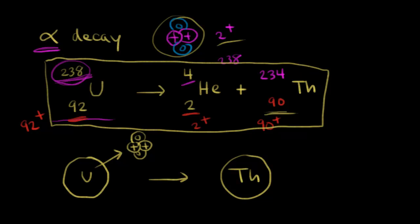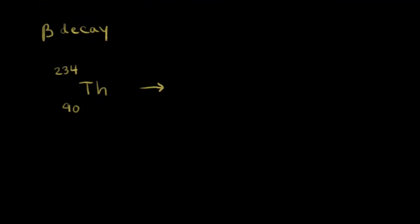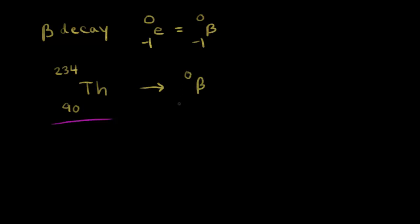Let's do beta decay. In beta decay, an electron is ejected from the nucleus. We represent an electron with a negative one charge below and a zero above, since it's not a proton nor a neutron. An electron ejected from the nucleus is called a beta particle. If a beta particle is ejected from the nucleus of thorium-234, we write the beta particle as zero on top and negative one below.